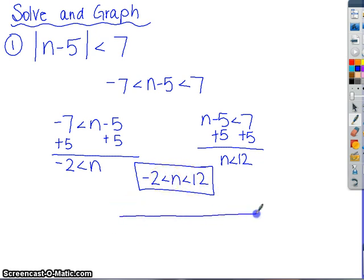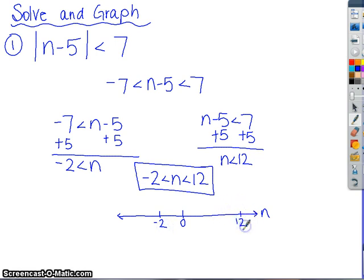Now for the graph. Label it — these are solutions of n. I'm going to put a 0, maybe negative 2 is here, maybe 12 is there. Since these are strictly less than, I'm going to use open circles at negative 2 and at 12, and then it's going to be all of these in between. So n lies between negative 2 and 12. There's an example of an 'and' absolute value inequality.